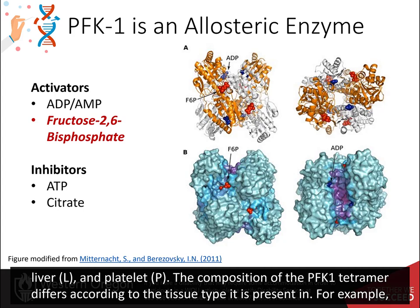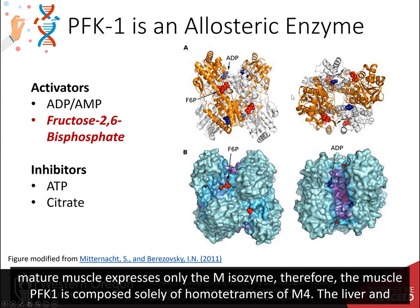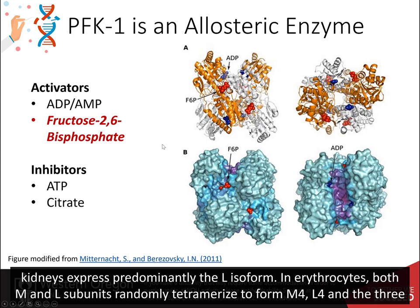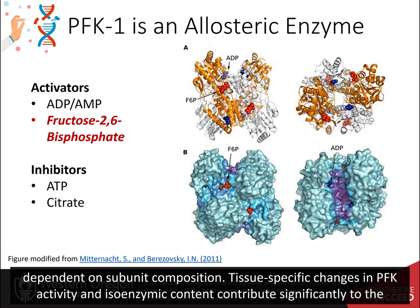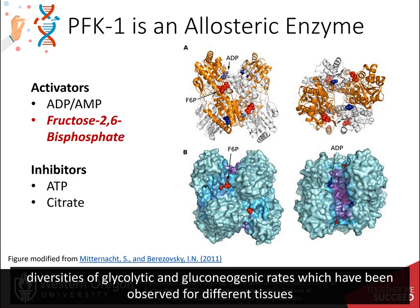The composition of the PFK1 tetramer differs according to the tissue type it is present in. For example, mature muscle expresses only the M isozyme; therefore, the muscle PFK1 is composed solely of homotetramers of M4. The liver and kidneys express predominantly the L isoform. In erythrocytes, both M and L subunits randomly tetramerize to form M4, L4, and the three hybrid forms: ML3, M2L2, and M3L. As a result, the kinetic and regulatory properties of the various isozyme pools are dependent on subunit composition. Tissue-specific changes in PFK activity and isoenzymic content contribute significantly to the diversities of glycolytic and gluconeogenic rates which have been observed for different tissues.